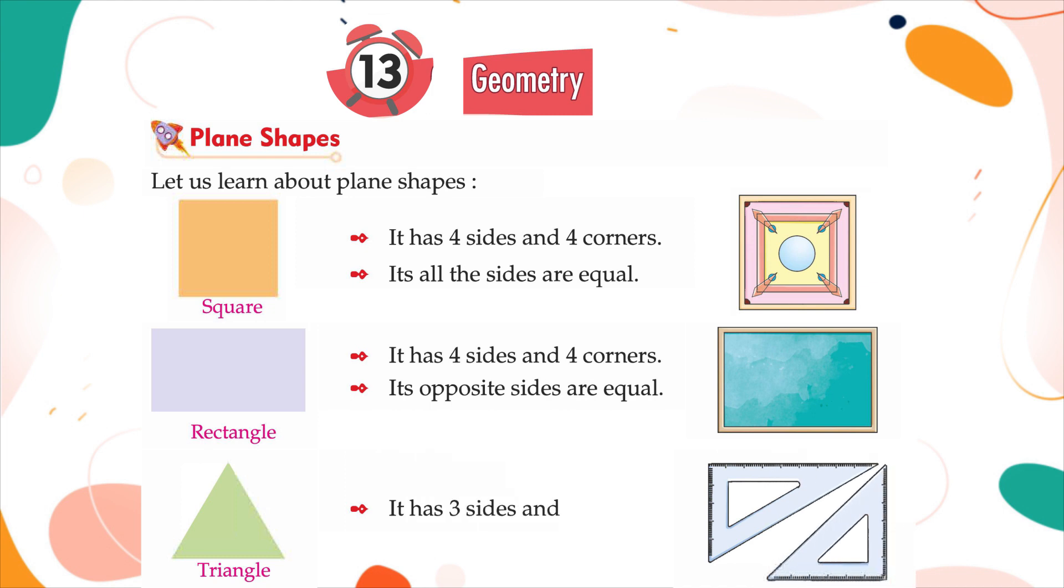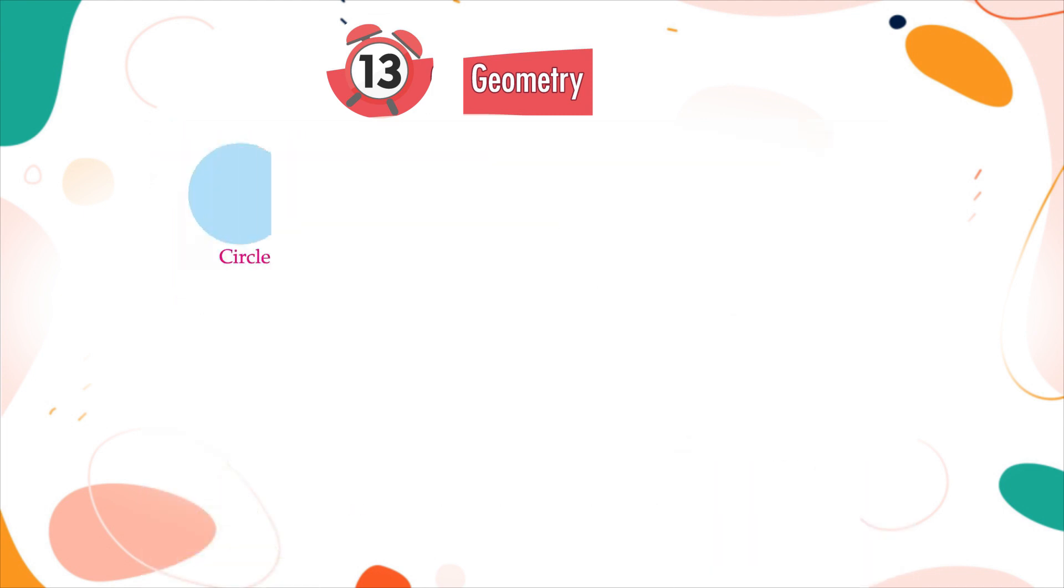Triangle: It has three sides and three corners. Circle: It has no side and no corner.